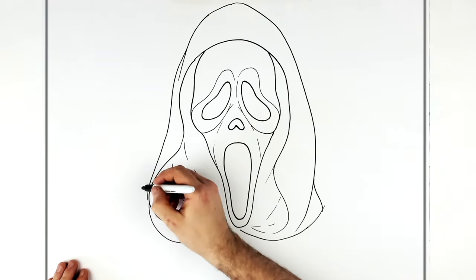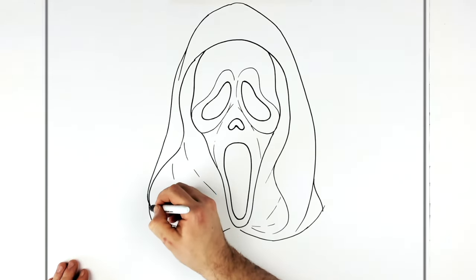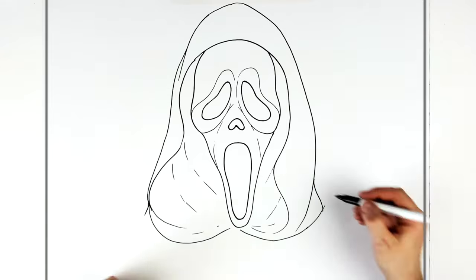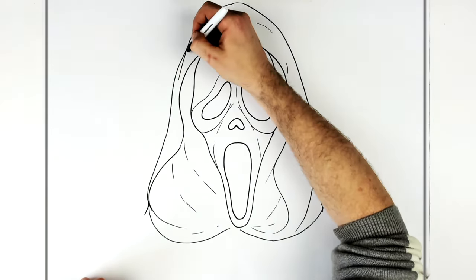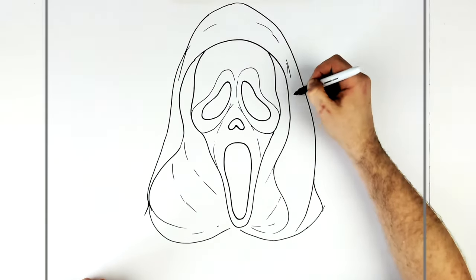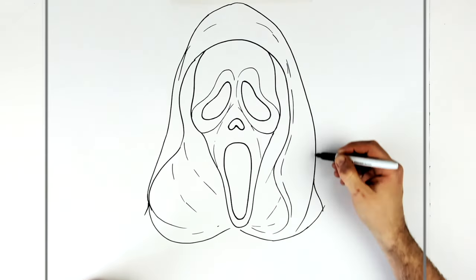So it joins the edge here. All right. So this will have like some lines just coming across, edge lines and stuff.